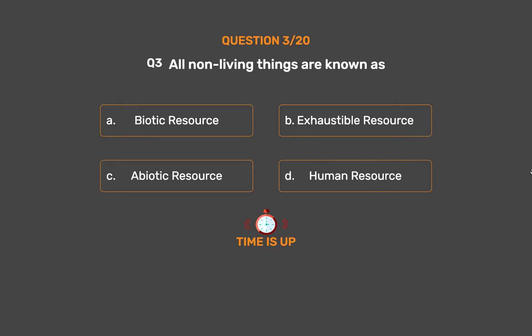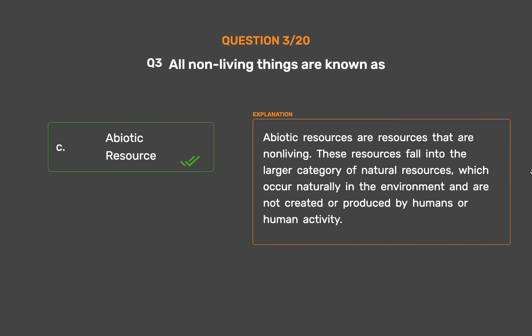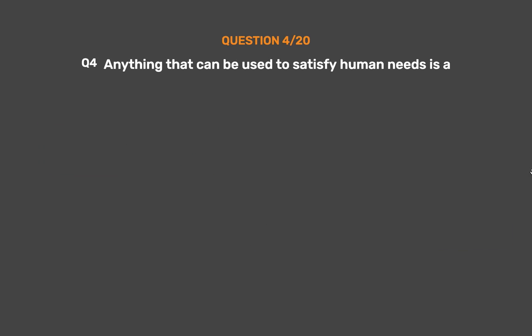The correct answer is Option C: Abiotic resource. Abiotic resources are resources that are non-living. These resources fall into the larger category of natural resources, which occur naturally in the environment and are not created or produced by humans or human activity.